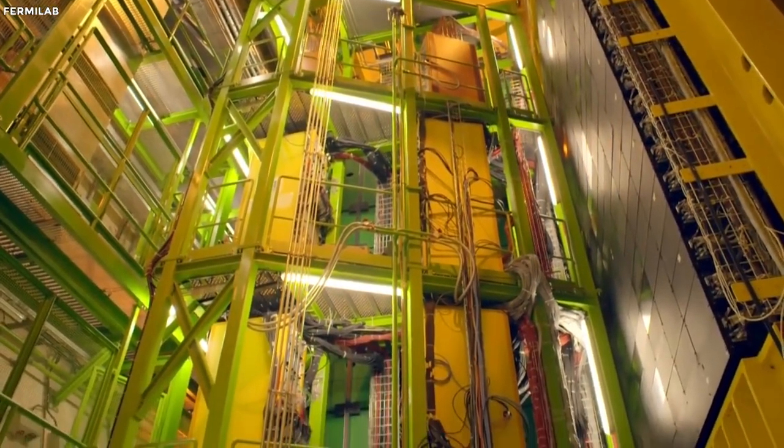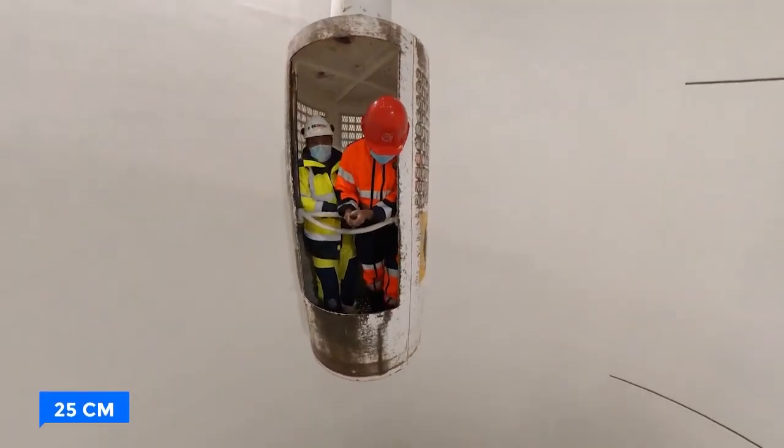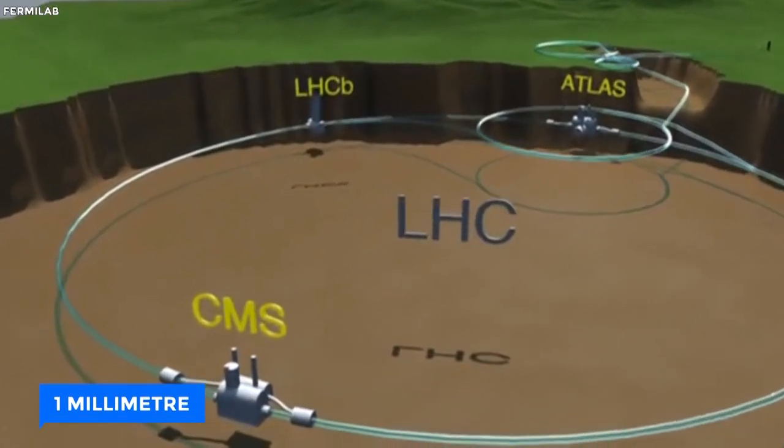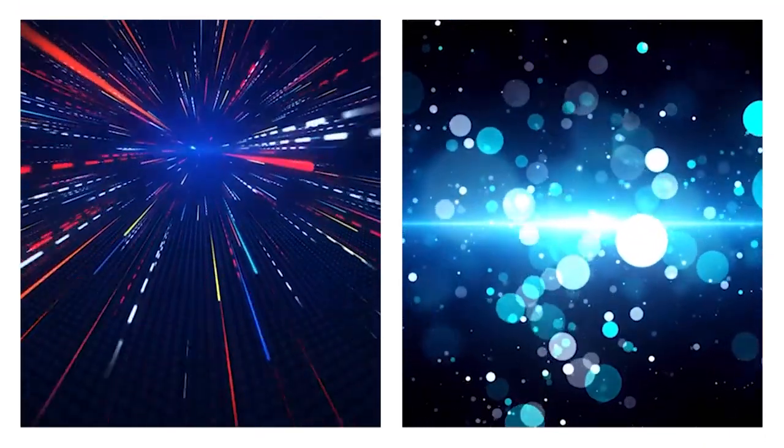Intriguingly, a less-known tidbit emerges. The Earth's crust beneath Geneva elevates by roughly 25 centimeters due to these ground tides, causing a subtle shift of one millimeter in the LHC's circumference. This minute change leads to remarkable alterations in beam energy and particle paths.